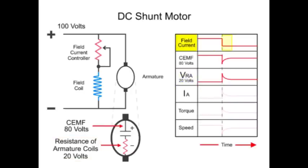When the field current is reduced, the CEMF drops to 50 volts and the drop across the resistance of the armature coils, VRA, increases to 50 volts.